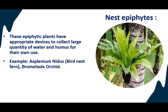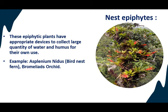The third is the nest epiphyte. As the name suggests, epiphytic plants have an appropriate device to collect large amounts of water and humus for their use. You can see in the image how the leaves are in a cluster forming a nest, so that during the rainy season, whatever moisture and rain is falling is collected in this cluster of leaves. Even soil particles carried by wind are collected here. Examples include Asplenium nidus, called the bird's nest fern, and Bromeliad orchid.